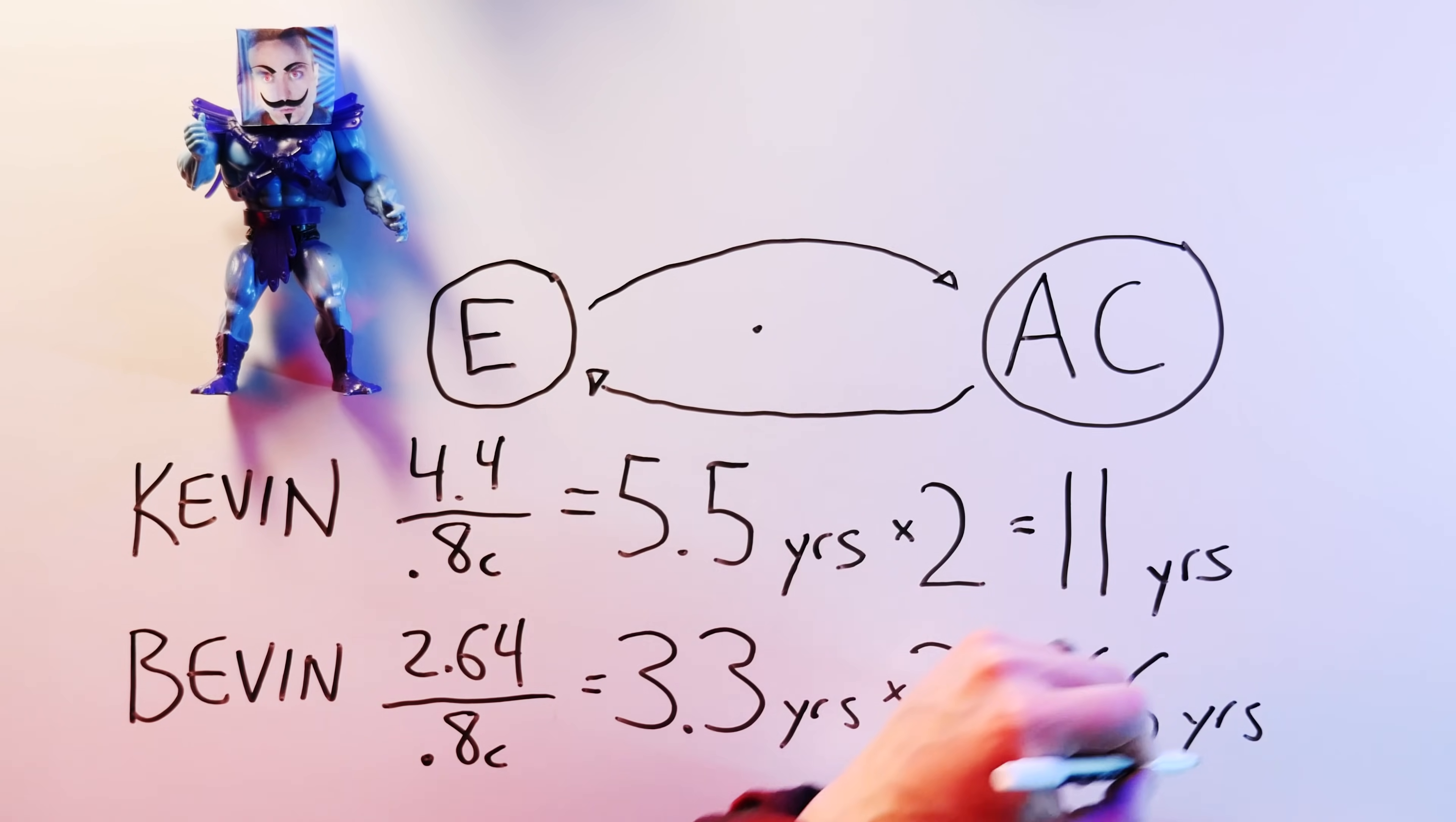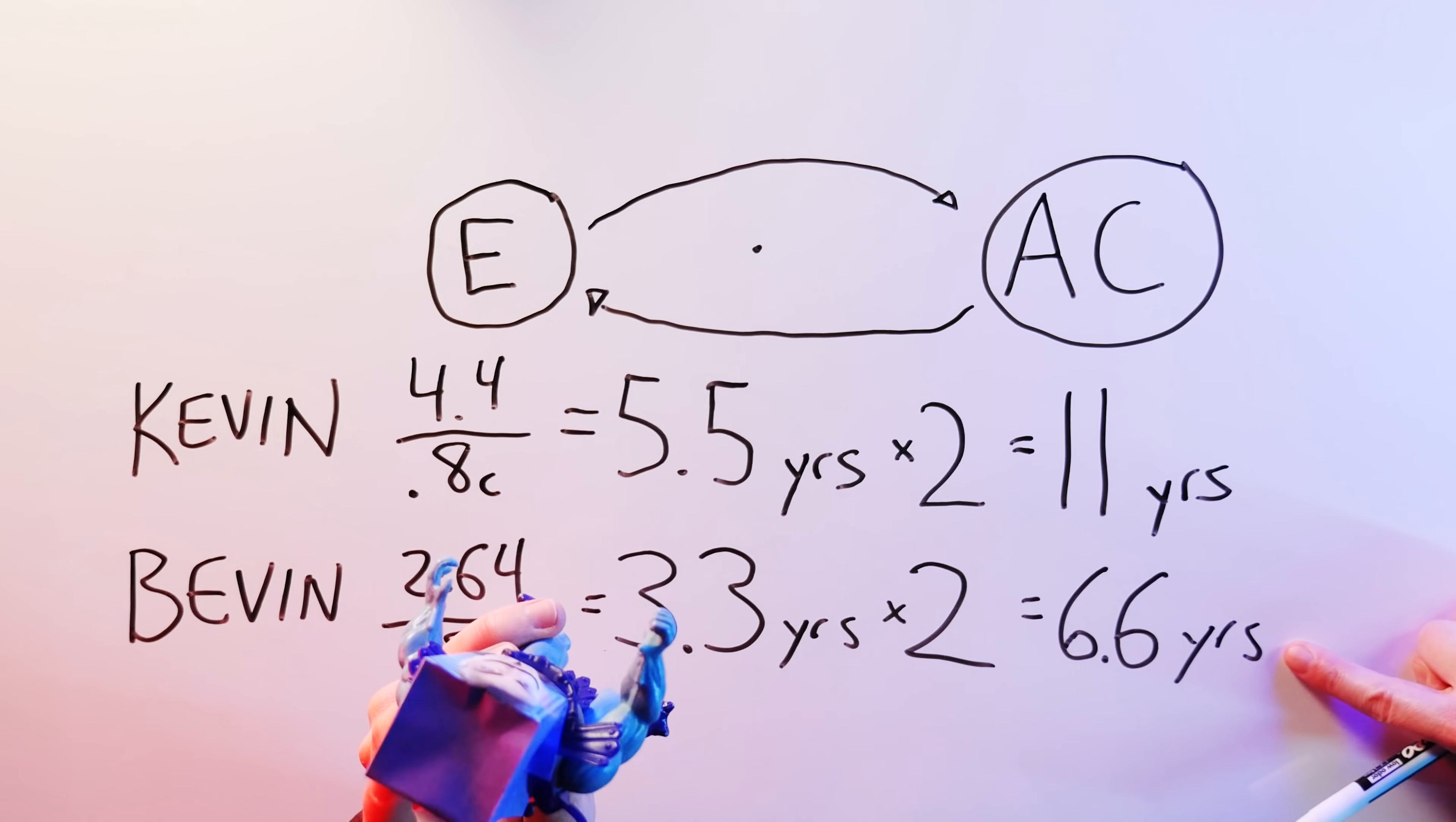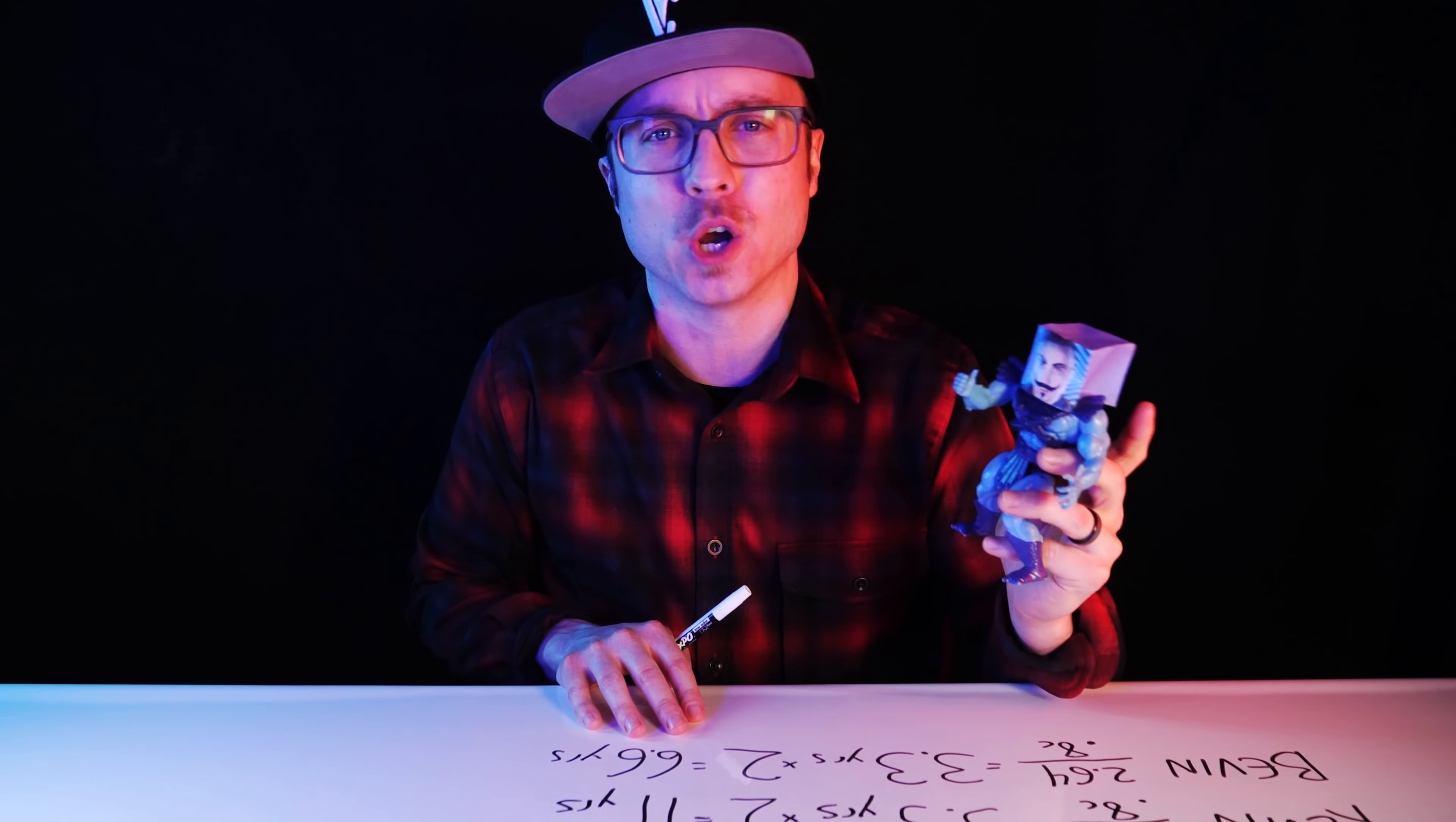To Bevan, his trip only took 6.6 years. My 11 years of freedom from Bevan were only 6.6 years of banishment to him. Which means my identical twin is now 4.4 years younger than me.